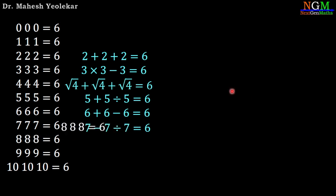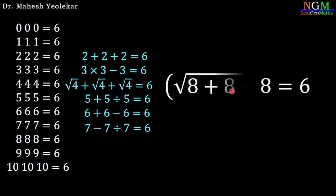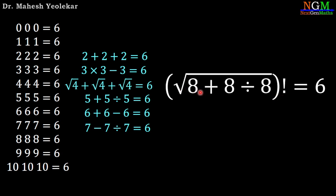Next equation: 8, 8, 8 equals 6. Apply square root, addition, division, and factorial operations: square root of 8 plus 8 divided by 8, giving 8 plus 1 equals 9, square root of 9 is 3, and 3 factorial equals 6.